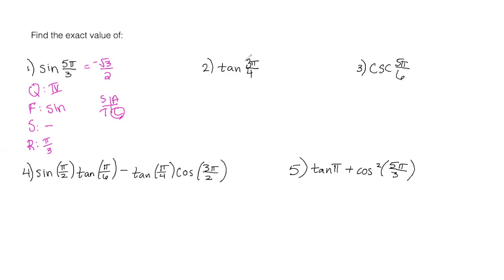For number two, I'm going to do the same thing but just sketch my ASTC. Three-fourths pi is really close to one pi, so it's between pi over two and pi — that means I have to be in quadrant two. In quadrant two, tan is negative. Tan of pi over four is one, so the value here is negative one.